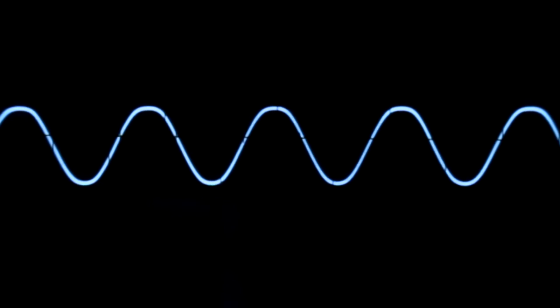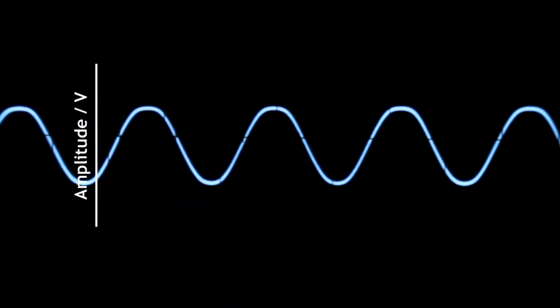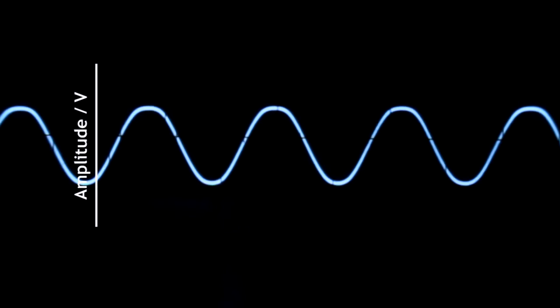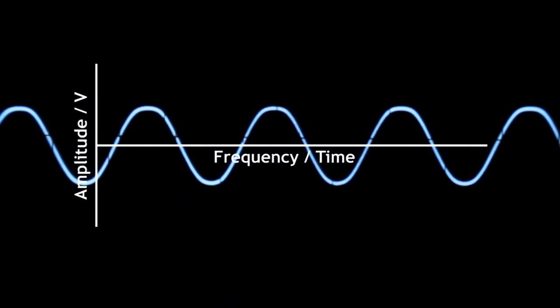Here we see a sine wave on the oscilloscope. The y-axis shows the amplitude or voltage level of the waveform, and the x-axis shows the frequency or the voltage change over a slice of time.